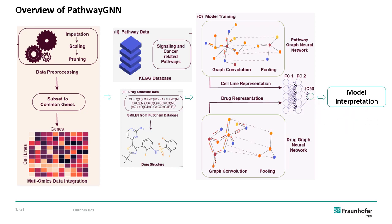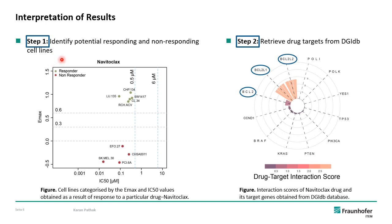We also did model interpretation. Starting with the interpretation results, we identified some drugs — for example, a drug called navitoclax. We identified some responding cell lines and some non-responding cell lines, plotting Emax versus IC50. Emax represents the amount of cells killed at the maximum concentration. The CERCOS plot represents the navitoclax drug targets, and the higher the interaction score, the higher they are ranked. This data is retrieved from the DGIDB database.